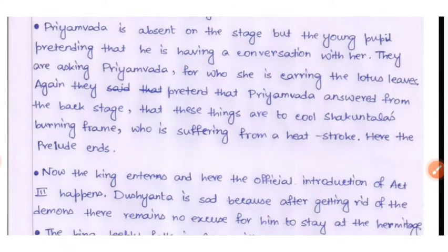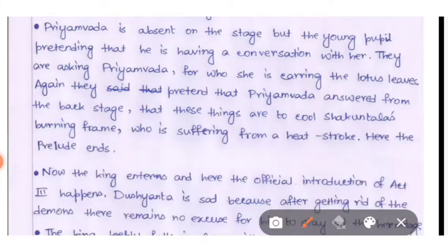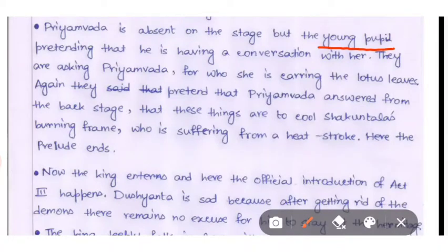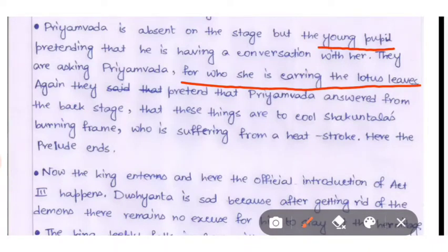In the prelude, the young people are still absent on stage. They are having a conversation with Priyambada from backstage. They are asking Priyambada for whom she is carrying the lotus leaves. Priyambada answers from the backstage.